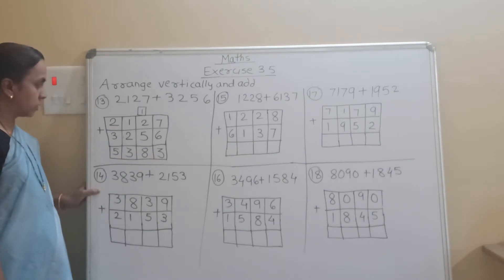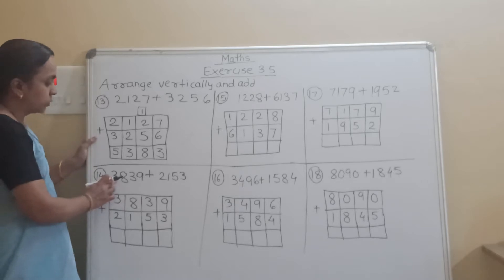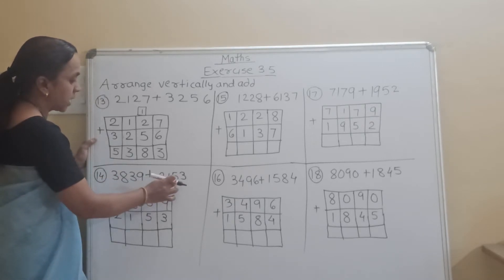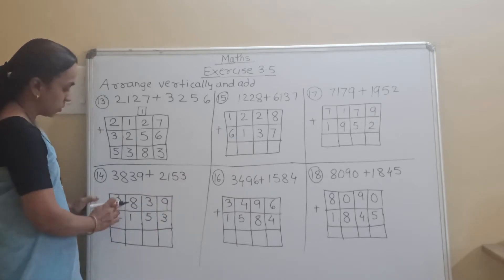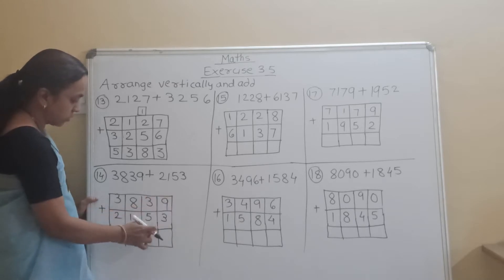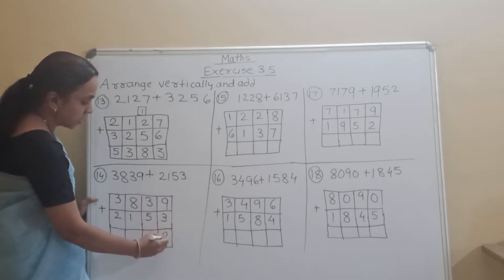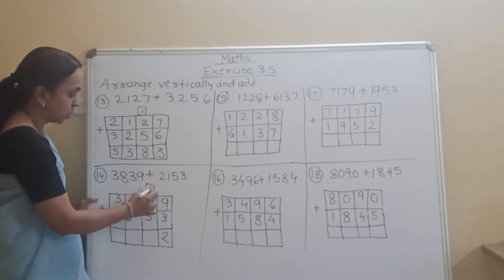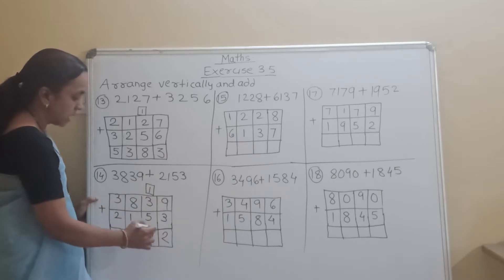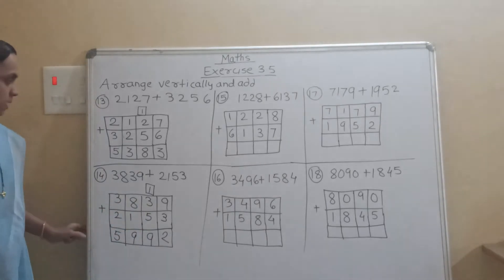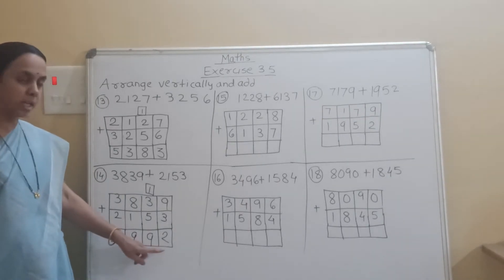Now the 14th question: write down 3839 plus 2153. So 9 plus 3 is 12, carry 1. Then 3 plus 1 is 4, 4 plus 5 is 9. Then 8 plus 1 is 9, 3 plus 2 is 5. Our answer is 5992.